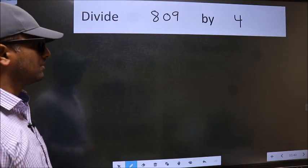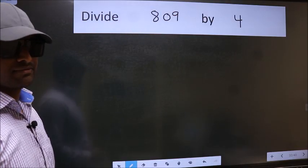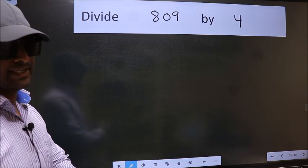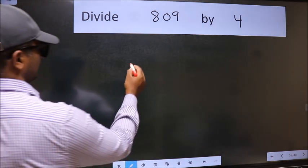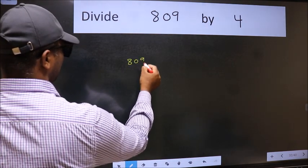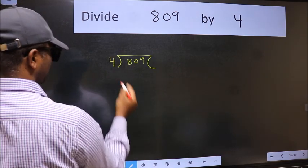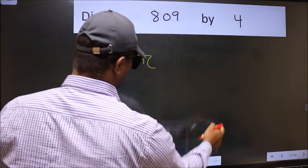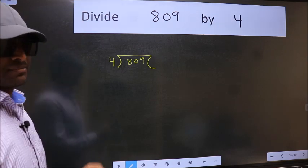Divide 809 by 4. To do this division, we should frame it in this way. 809 and 4 here. This is your step 1.